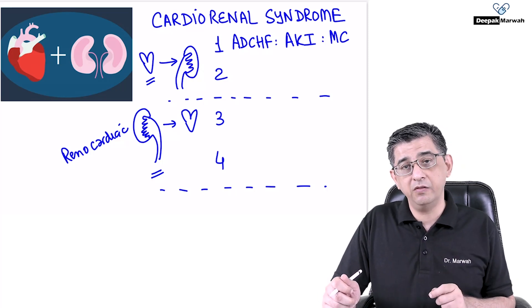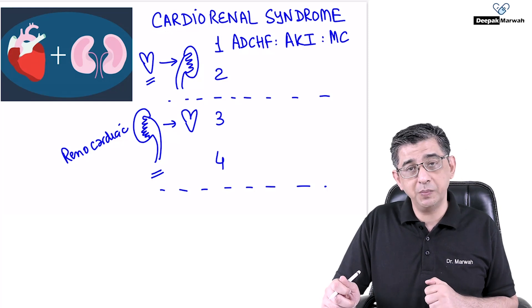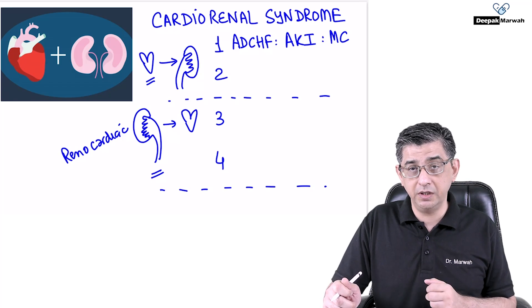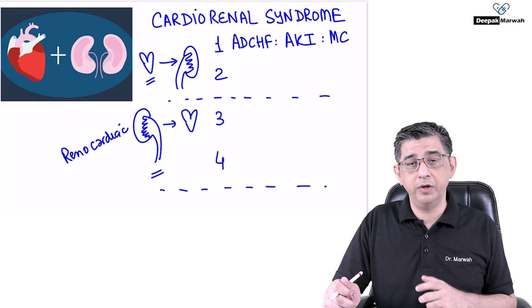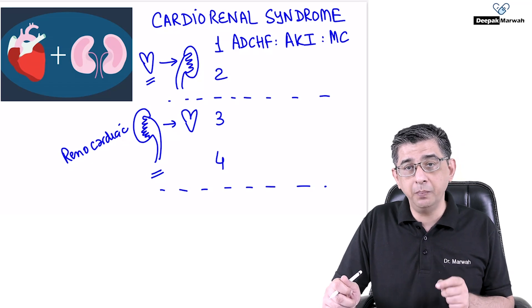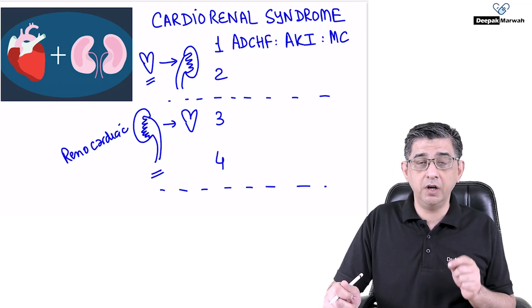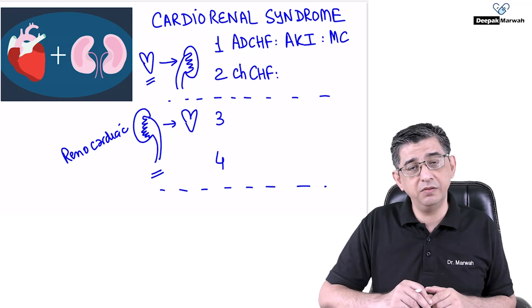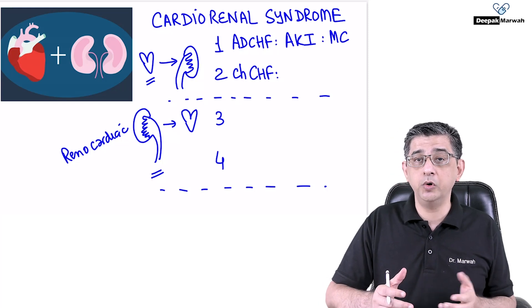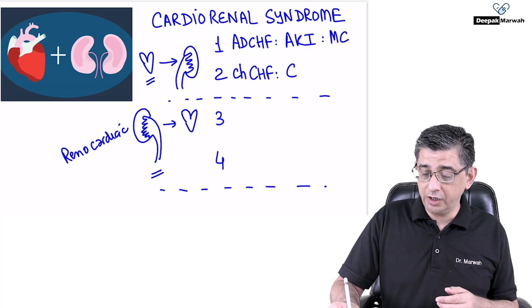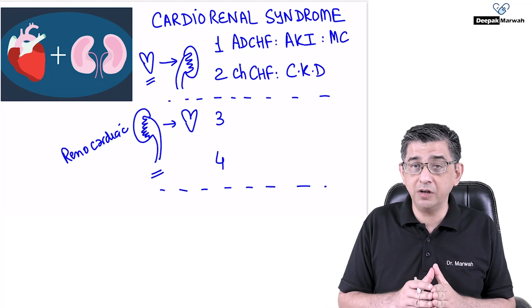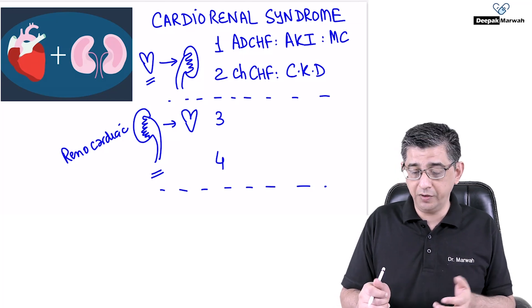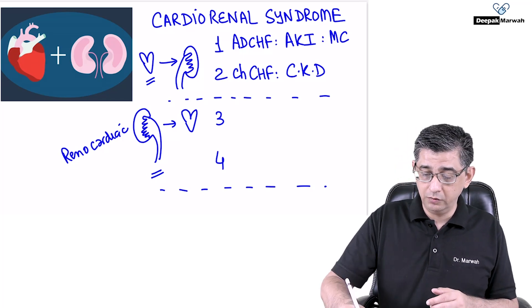For Type 2: a patient with triple, double, or single vessel disease who didn't follow advice for CABG or stenting develops ischemic cardiomyopathy. Ischemic cardiomyopathy contributes to chronic congestive heart failure, which decreases perfusion to the kidney and leads to chronic kidney disease. So in Type 1 and Type 2, the problem starts from the heart — it's just a difference of acute versus chronic.